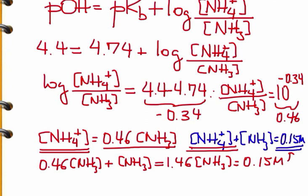From there, the concentration of ammonia is 0.15 divided by 1.46, which gives us 0.103 molar.